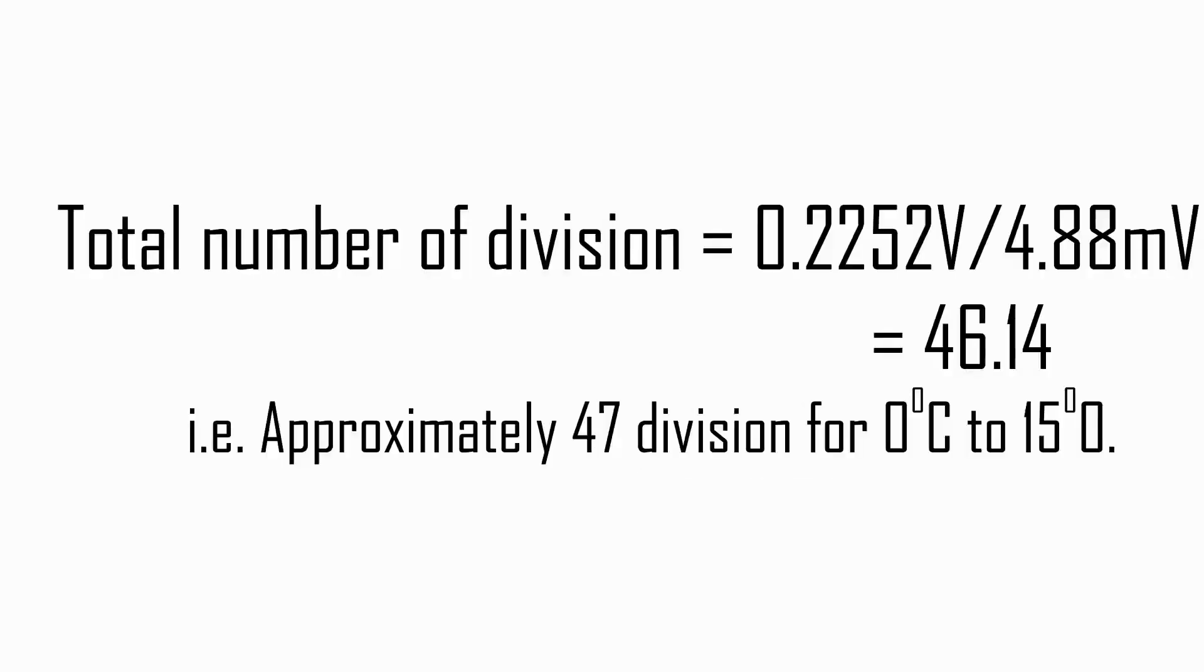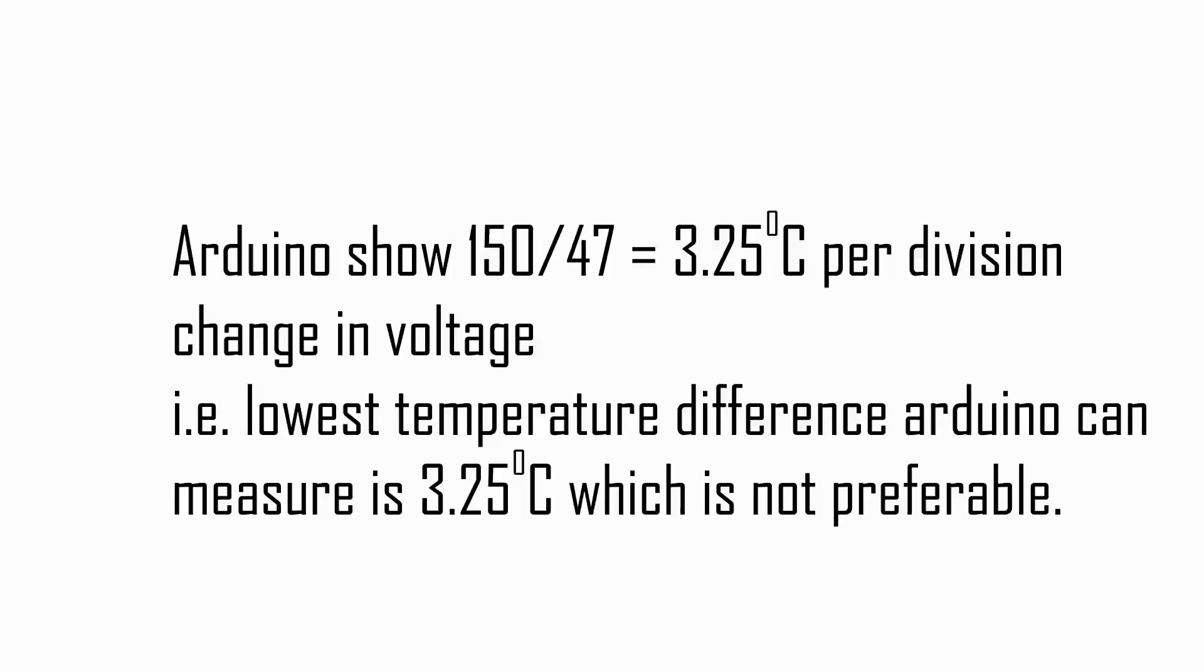Total number of divisions for 0.2252 volt is equal to 0.2252 volt divided by 4.88 millivolt, that is approximately 47 divisions for 0 degree Celsius to 150 degree Celsius. From this calculation, we clearly see that division is lower than temperature range. That is, Arduino shows 3.25 degree Celsius per division change in voltage. The lowest temperature difference Arduino can measure is 3.25 degree Celsius, which is not preferable. So we need amplifier.